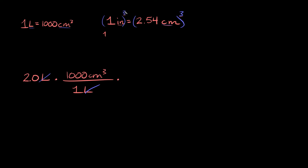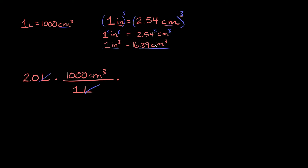Remember, the exponent gets applied to everything inside the parentheses — so it applies to the 1 and to the inches. We get 1 cubed × inches cubed = 2.54 cubed × centimeters cubed. Since 1 cubed equals 1 and 2.54 cubed is approximately 16.39, our volumetric relationship is: 1 inch cubed equals approximately 16.39 centimeters cubed. This is the conversion factor we'll multiply by.